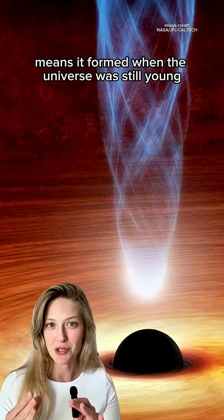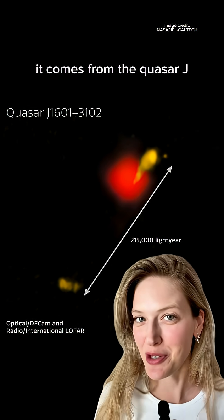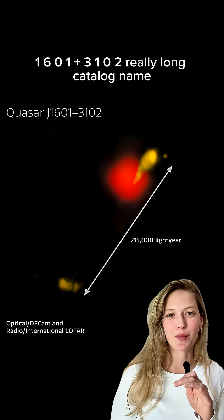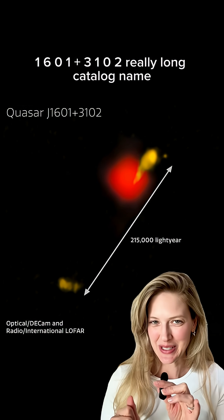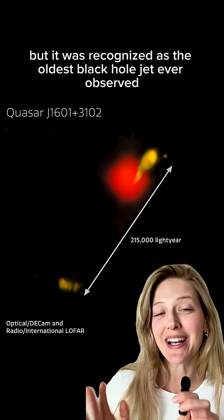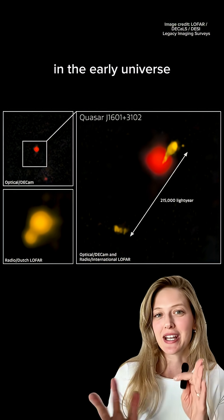The fact that we're seeing it now means it formed when the universe was still young. It comes from the quasar J1601+3102, a really long catalog name, but it was recognized as the oldest black hole jet ever observed in the early universe.